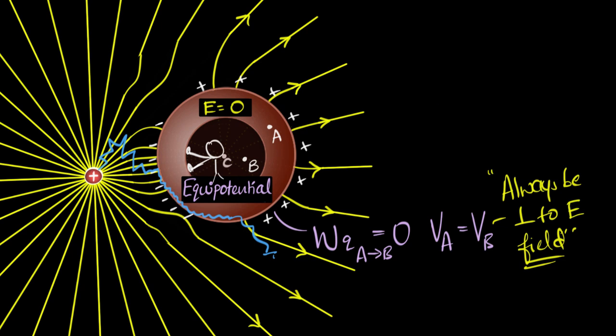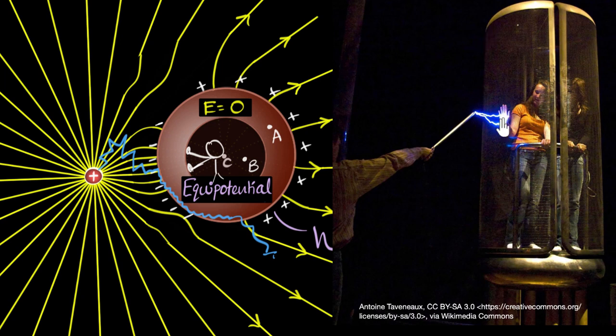That's exactly what's happening over here. This is a completely closed conductor. Electric fields cannot penetrate inside this conductor, because of which, when she's touching the inner surface, the lightning cannot enter the surface, and that's why she's not getting electrocuted.